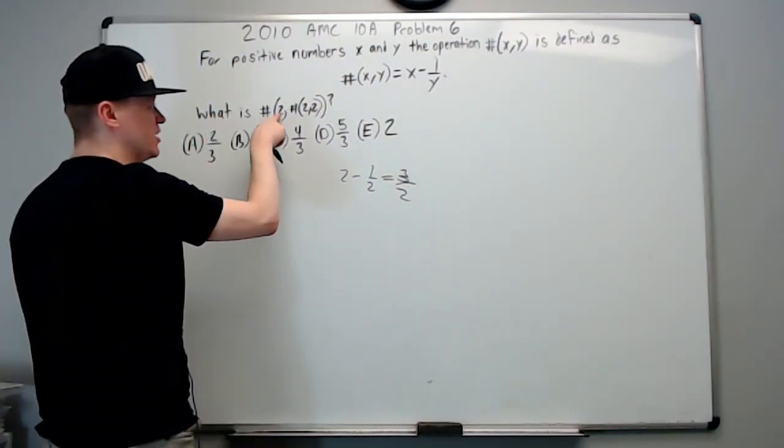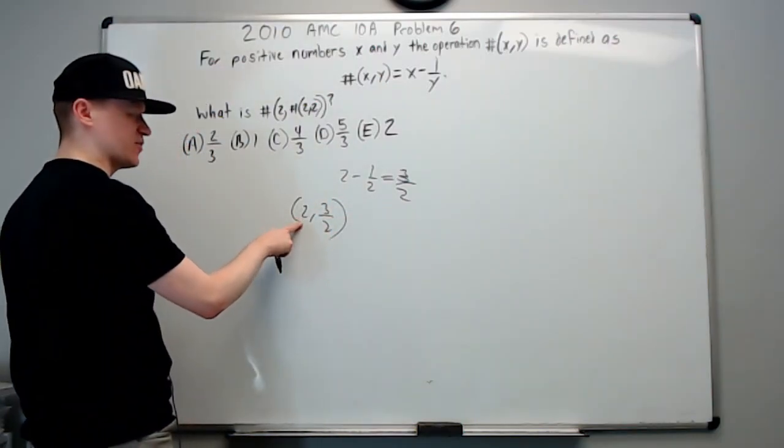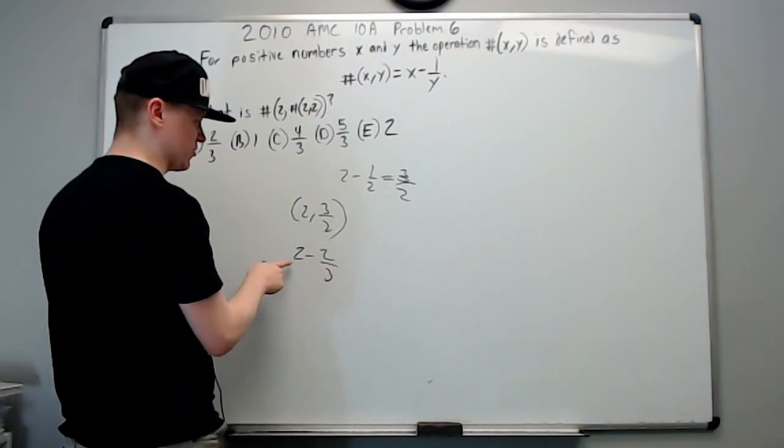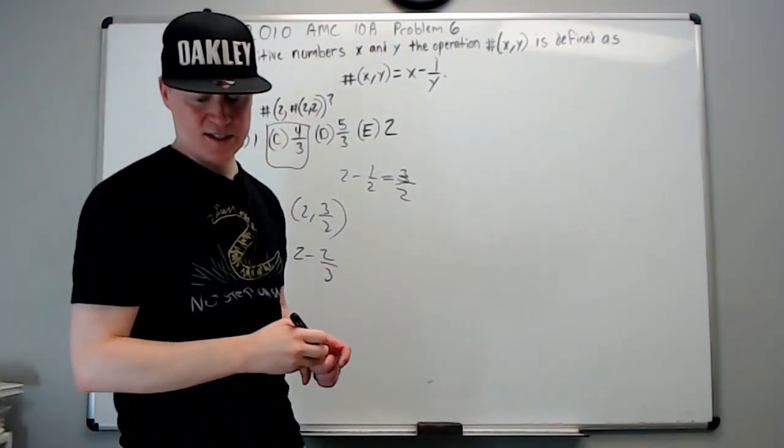Now you're going to have the symbol 2 with 3 over 2, and again it's the first minus the reciprocal of the second. So 2 minus 2 thirds: 6 thirds minus 2 thirds is 4 thirds, which is C.